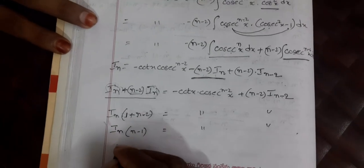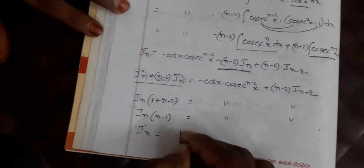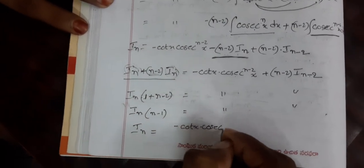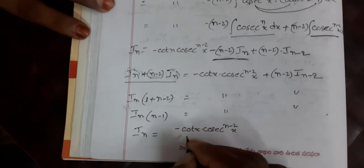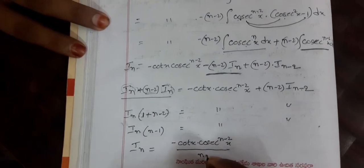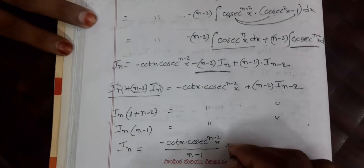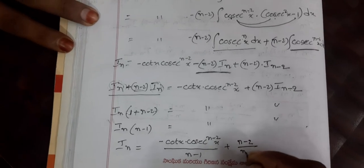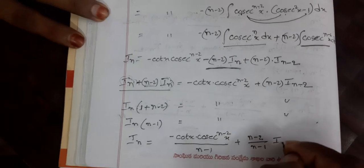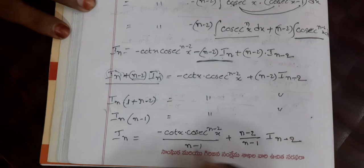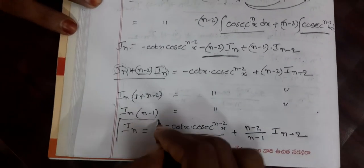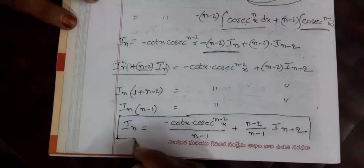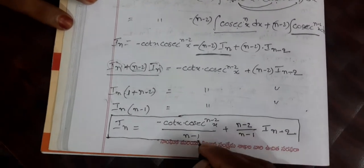Dividing by (n−1), the reduction formula is: I_n = [−cot(x)·cosecant^(n-2)(x)] / (n−1) + [(n−2)/(n−1)]·I_(n-2). This is the reduction formula for ∫cosecant^n(x) dx.